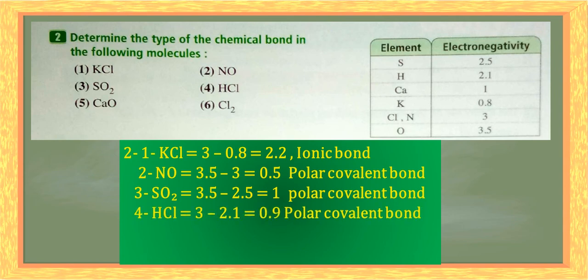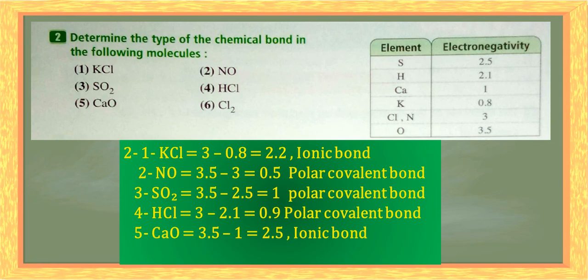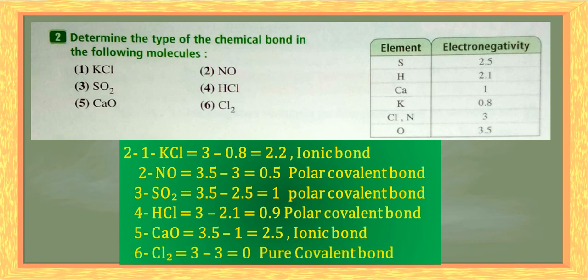Number four: HCl — difference is 3 minus 2.1 equals 0.9 — polar covalent bond. Number five: calcium oxide CaO — difference is 3.5 minus 1 equals 2.5 — ionic bond, the highest ionic bond. Number six: chlorine molecule Cl2 — difference is 0 — pure covalent bond. Comparing them: the highest ionic bond is CaO, and the least ionic is KCl at 2.2.